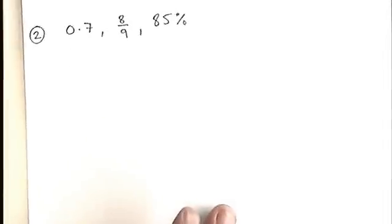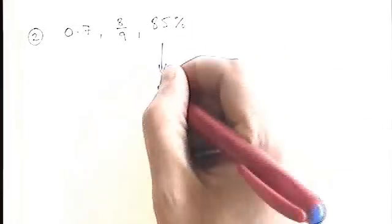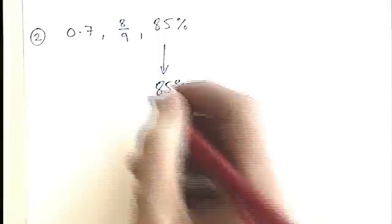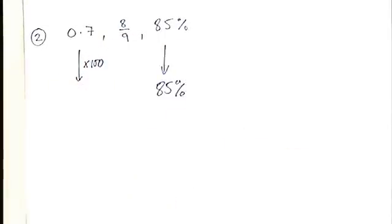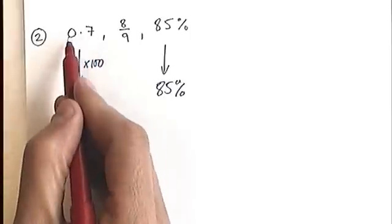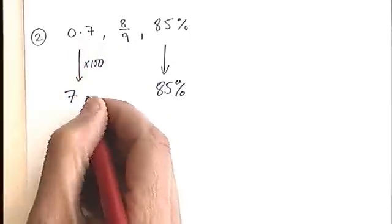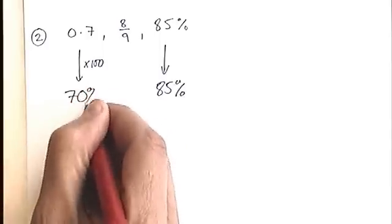Here's another example. This one might be a little bit more tricky for some people because of the 8 ninths. The percentage is already in the right format. The 0.7 — again you times by 100. Some people would be tempted to put 7%, but track that 7 two places to the left: it goes into the units and then the tens, so it should be in the tens column, indicating that it is 70%.